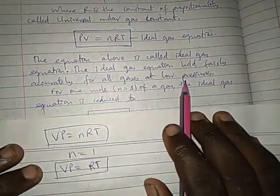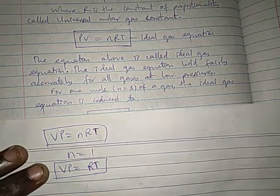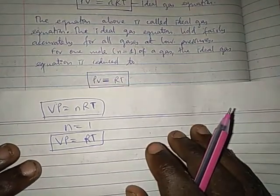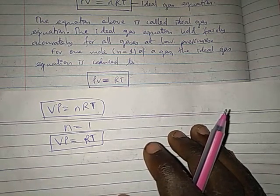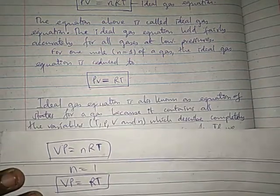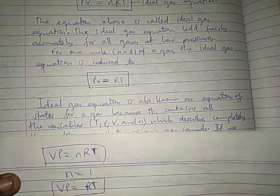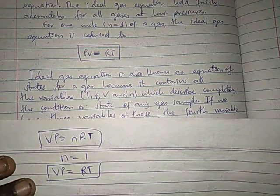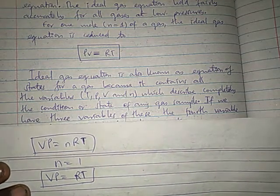The ideal gas equation holds fairly accurately for all gases at low temperature. We shall discuss later why it holds only at low temperature — because at high temperature, different gases vary in their parameters, and that variation causes them to behave differently. The ideal gas equation is also known as the equation of state for a gas, because it contains all variables: temperature, pressure, volume, and number of moles. It completely describes the condition or state of any gas sample.